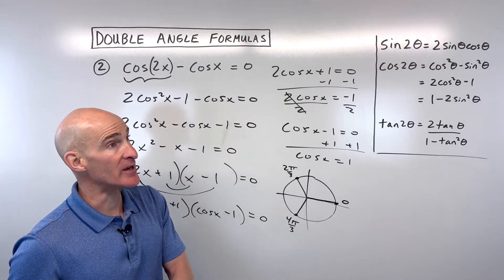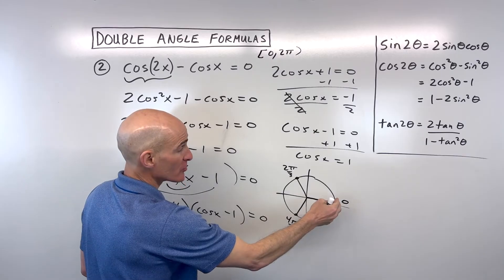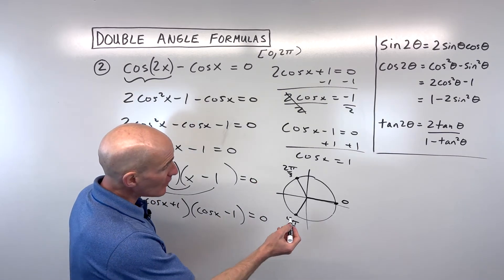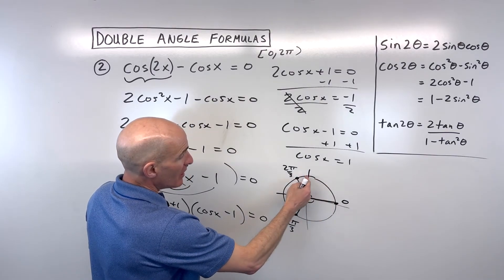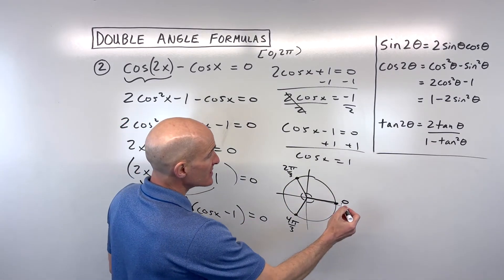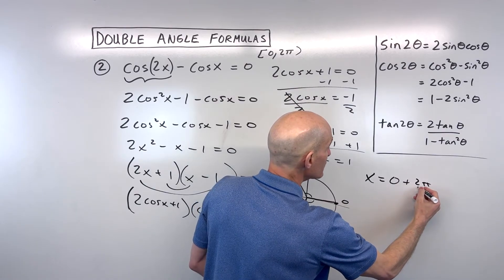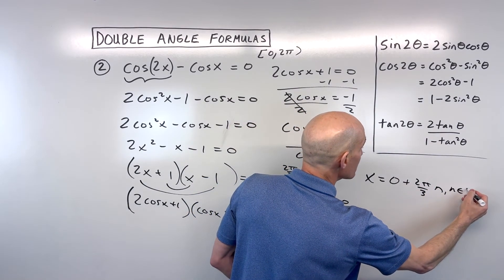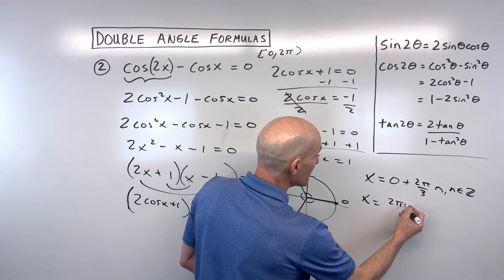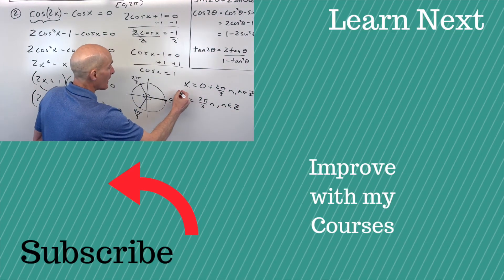Now depending on how the problem is written, if it said solve this equation between zero and 2π, then we would just list these angles once around the unit circle. I'd say zero, 2π/3, and 4π/3. But if it doesn't say that and it wants a general solution, what you notice here is that these are equally spaced. They're 120 degrees apart. So what we could say is x is equal to zero plus multiples of 2π/3, where n is an element of the set of integers. So you don't want to have n be a half or a third. I would probably just condense this down into saying x = 2π/3 × n, where n is an element of the set of integers.